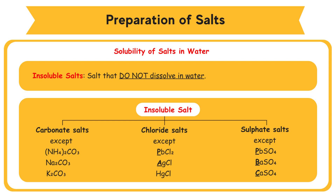Acronym for Insoluble Salts: For Chlorides — Pb, Hg, Ag: P equals PbCl2, A equals AgCl. For Sulfates — P equals PbSO4, B equals BaSO4, C equals CaSO4.